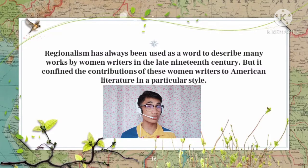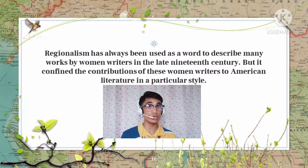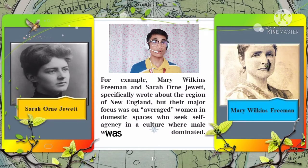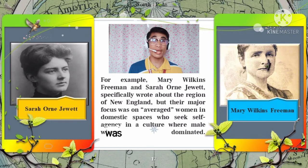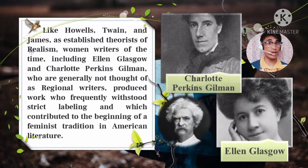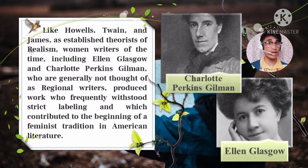Regionalism has often been used to describe works by women writers in the late 19th century, but this confined their contributions to American literature to a particular style. Mary Wilkins Freeman and Sarah Orne Jewett specifically wrote about New England, but their major focus was on average women in domestic spaces who sought self-agency in a male-dominated culture. Like Howells, Twain, and James — established theorists of realism — women writers including Ellen Glasgow and Charlotte Perkins Gilman, though not generally thought of as regional writers, produced work that frequently resisted strict labeling and contributed to the beginning of a feminist tradition in American literature. Literary labels help shape the style of stories written in the late 19th century, but some works that have withstood the test of time defy reductionism.